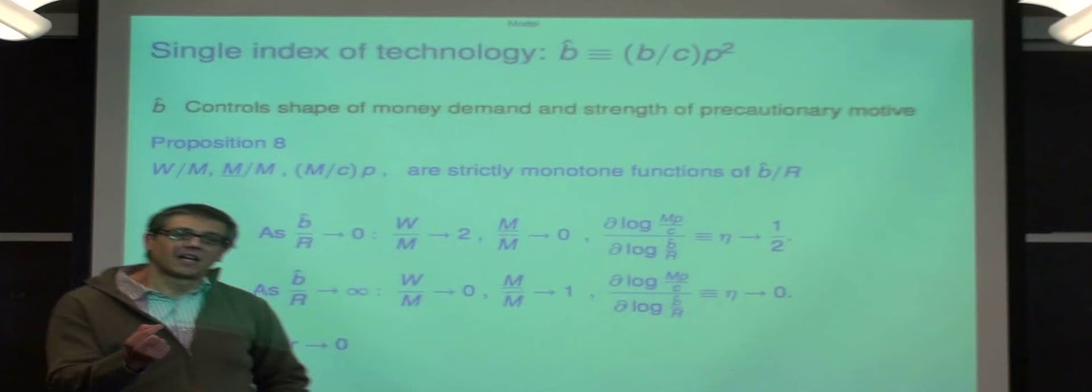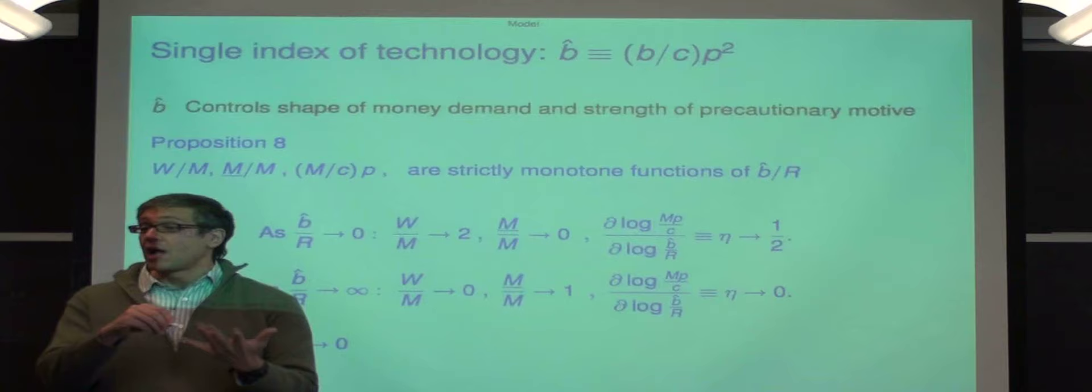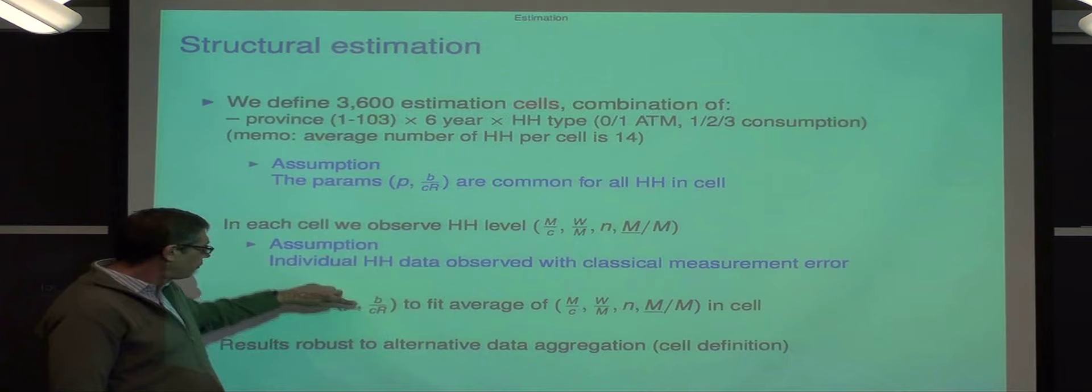The idea is that you're going to have, for a given household, you could estimate the model. Why? Because you have a bunch of different decisions: how often to go to the bank, how much money you withdraw on average, how much you have, how much you have at the time of the withdrawal, all related to essentially two parameters. So essentially there are two parameters to estimate, these two: P and this parameter.